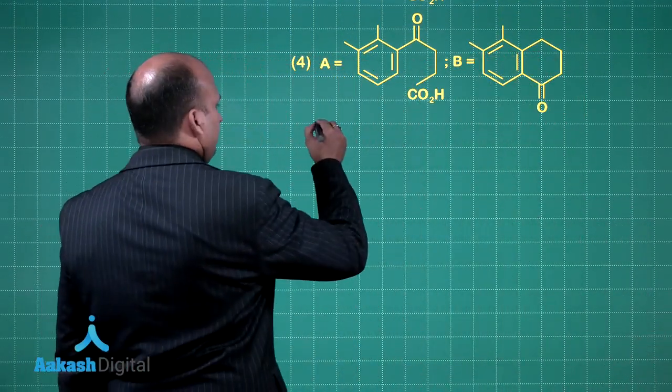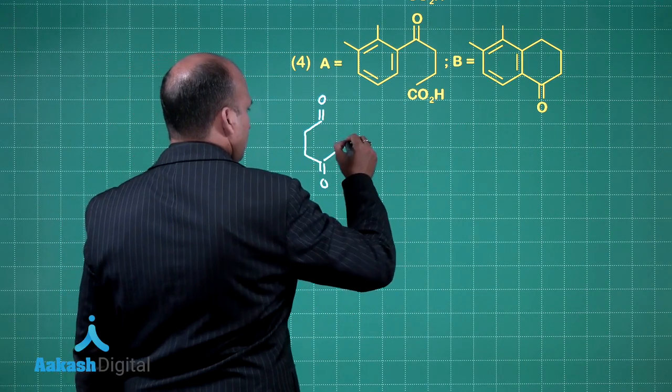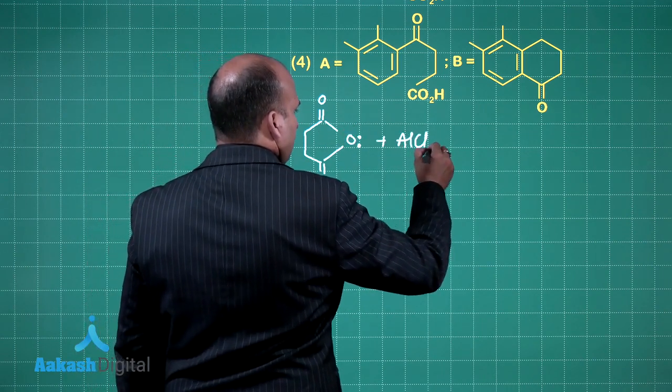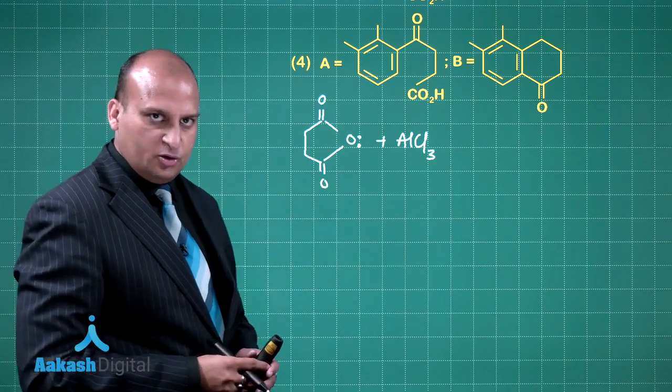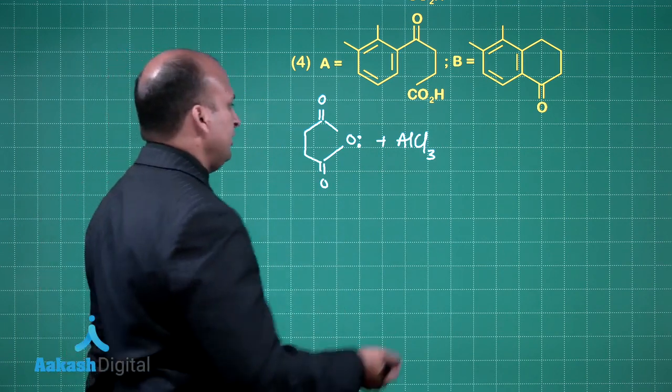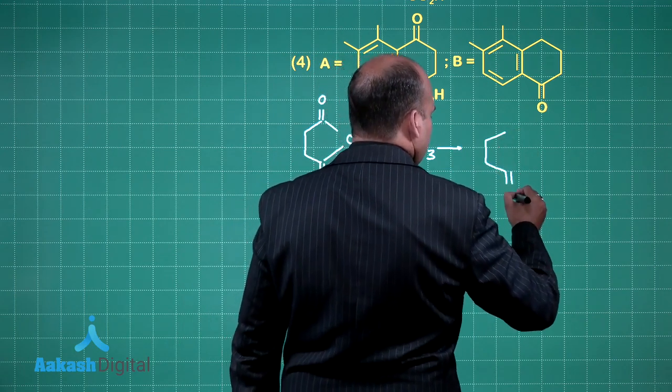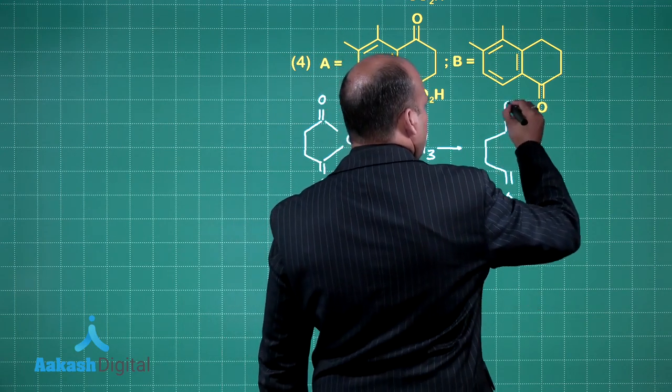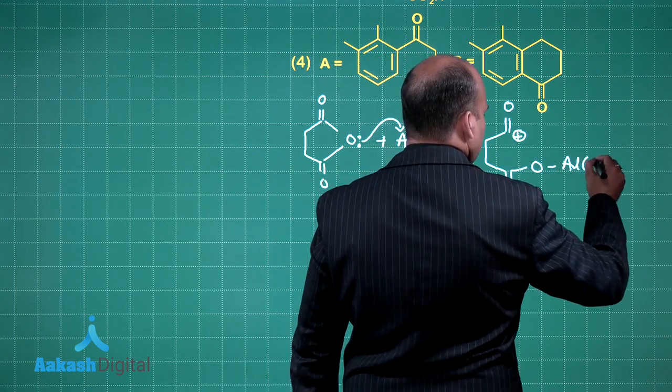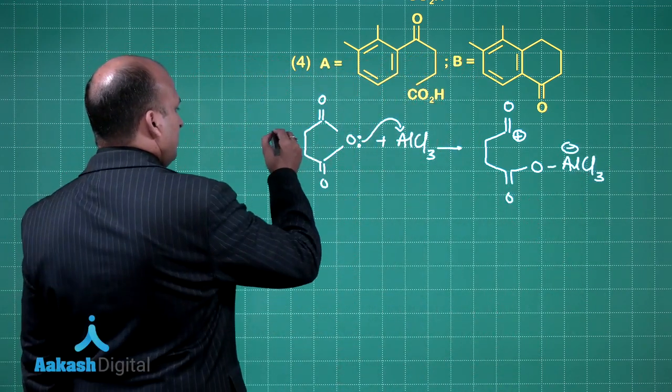See in the first step when I look at this compound, you observe oxygen is having a lone pair of electron over here. This AlCl3 is helping in the generation of the electrophile. So what is the electrophile being generated over here? See this carbon now behaves as an electrophile. Now this carbon will attack on the benzene ring. So this is step number 1.